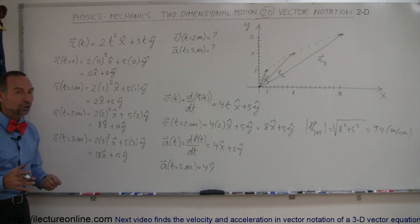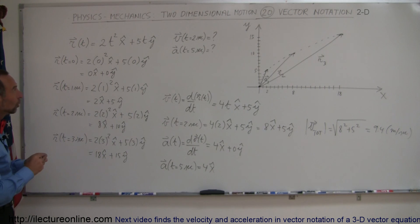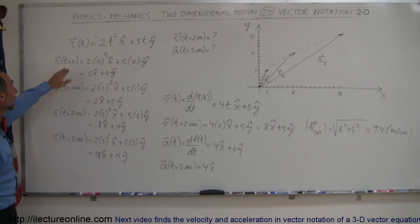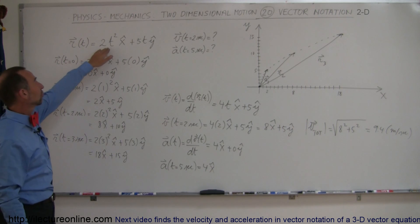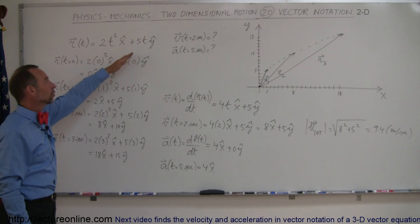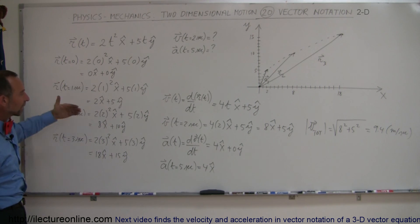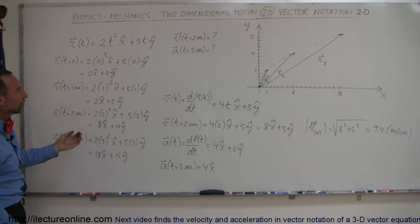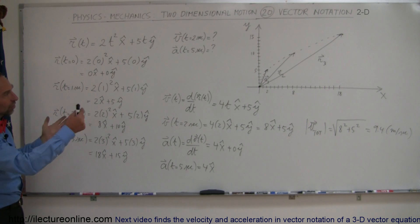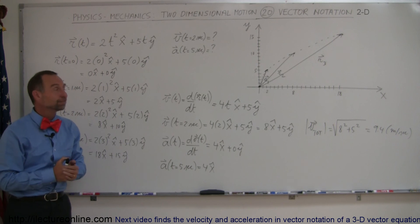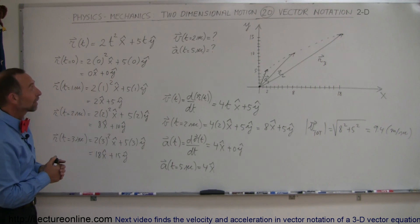Here you have a good concept of how to handle two-dimensional or three-dimensional motion of an object that has a position vector as a function of time. To find velocity and acceleration, you take the first and second derivatives respectively, then plug in the time values. Hopefully that helped — that's how you do it.